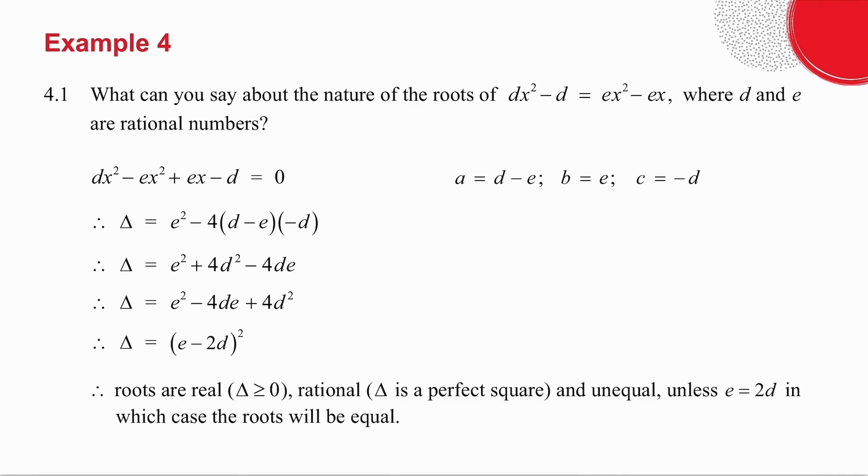I then go through my checklist. Is delta greater than or equal to 0, or is it less than 0? Well, a bracket squared, if e and d are both rational numbers, is always going to be greater than or equal to 0. So my roots are real. Is this a perfect square? Yes it is, because I've got a square there. So my roots are rational.